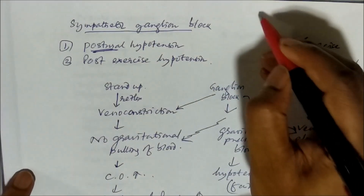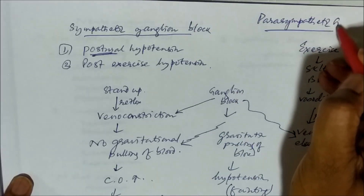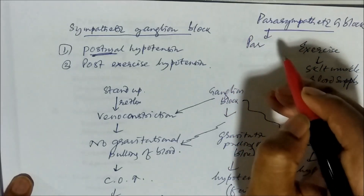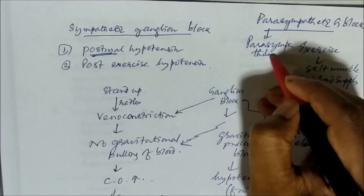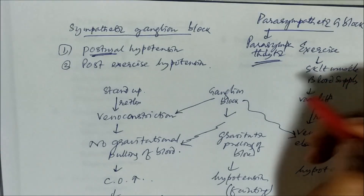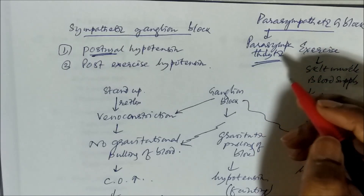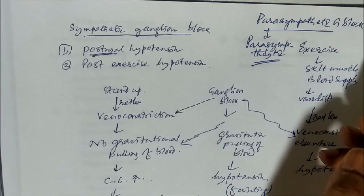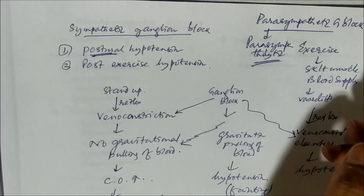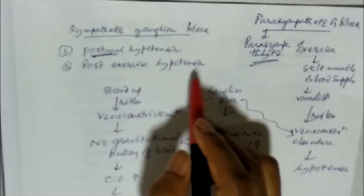The other effect is parasympathetic ganglion block. Parasympathetic ganglion block leads to all parasympatholytic actions — dry mouth, constipation, impaired micturition, delirium, sweating, atony of bladder, atony of GIT. Because of their sympathetic blocking action, ganglion blockers can be used in severe hypertension. This is the major use of these ganglion blockers.